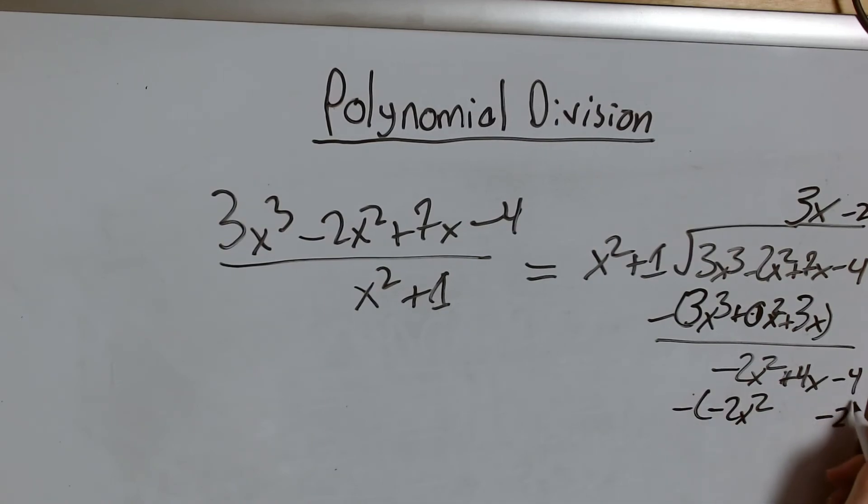Alright. So this cancels out. I have a 4x that I don't change then I have a negative 4 plus 2 which is actually a negative 2. So I have a remainder of 4x minus 2.